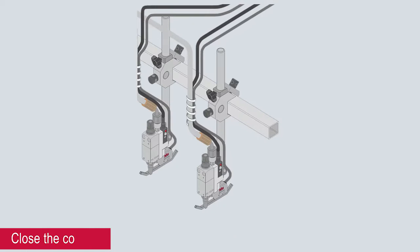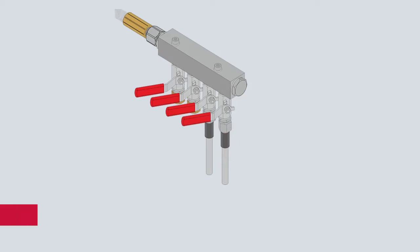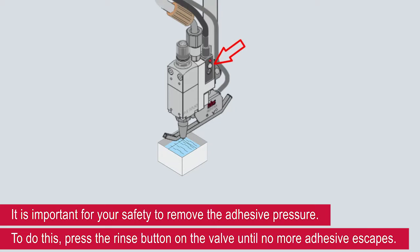Close the corresponding ball valve at the glue distributor. It is important for your safety to remove the adhesive pressure. To do this, press the rinse button on the valve until no more adhesive escapes.